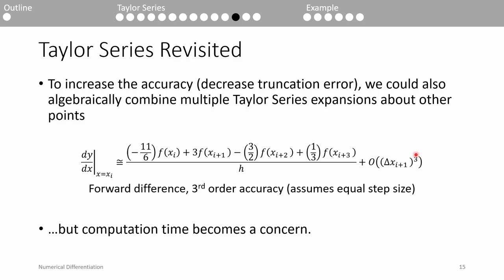One of the chief concerns of using very high accuracy schemes is the computation time. This formula requires you to do six more operations than the regular forward difference method. We have to multiply the first two terms by the coefficients negative 11 over 6 and 3, then also tack on additional coefficients to the additional points we include: f of xi plus 2 and f of xi plus 3. In total this gives us 6 more things we have to compute just to get our dy/dx estimate. This can really bog down your computer if you have a massive data set, so more accuracy isn't always viable.